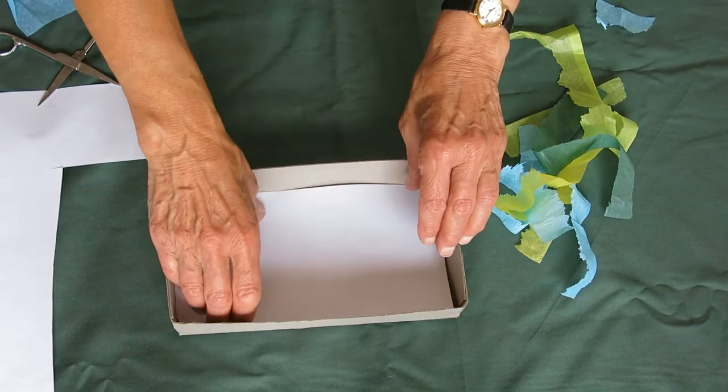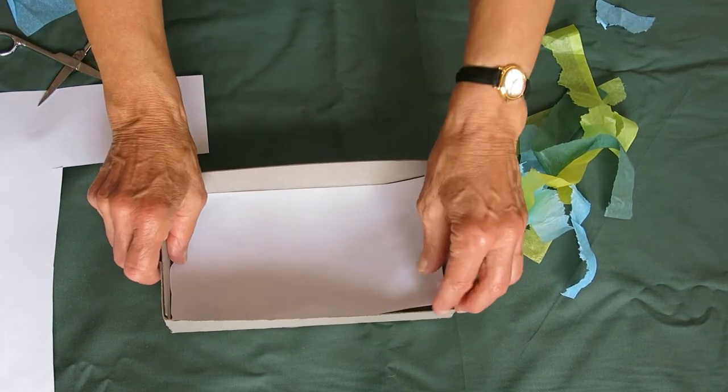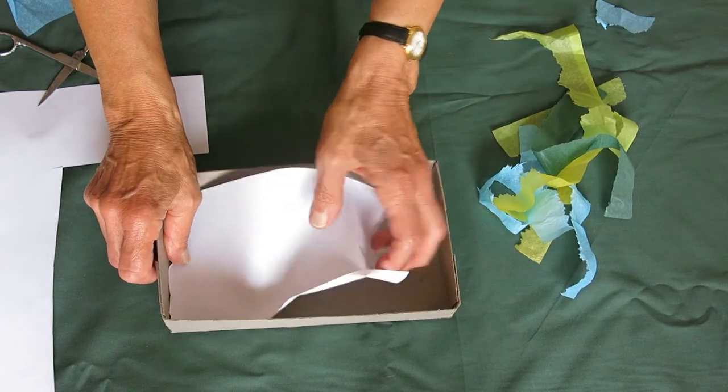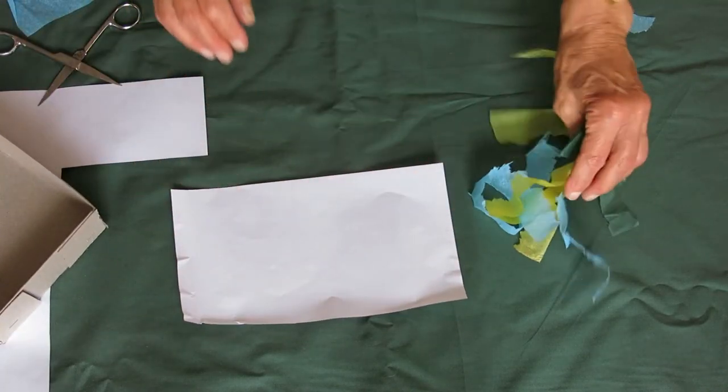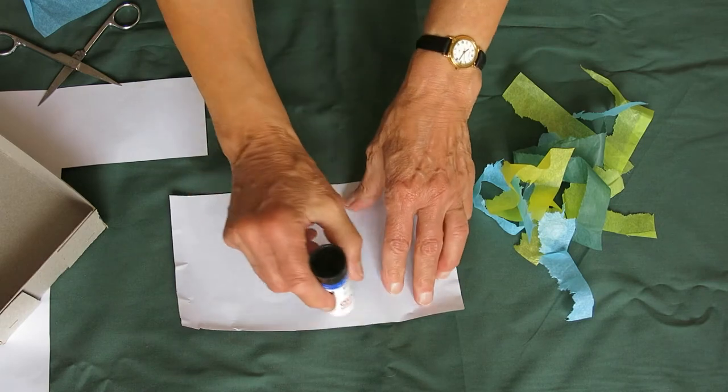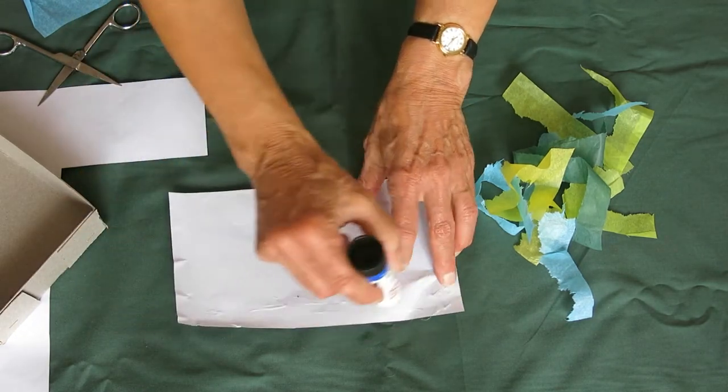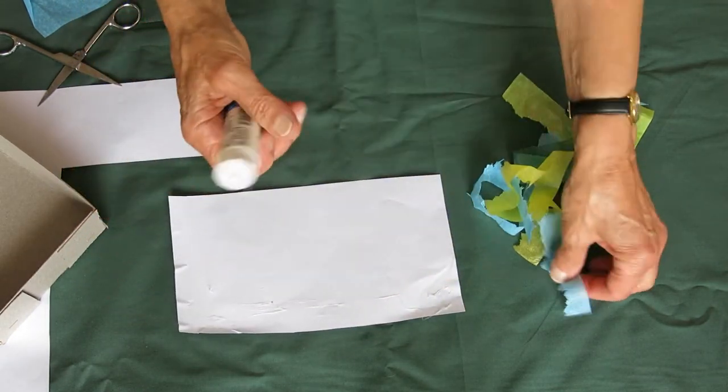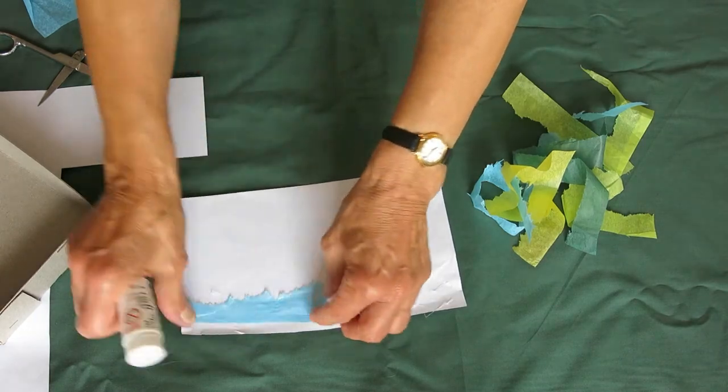The next thing you need to do is to decide what you want your background to look like. If you're going to make a fish like I did, you can make a watery background very easily by just using strips of tissue. Stick them on.